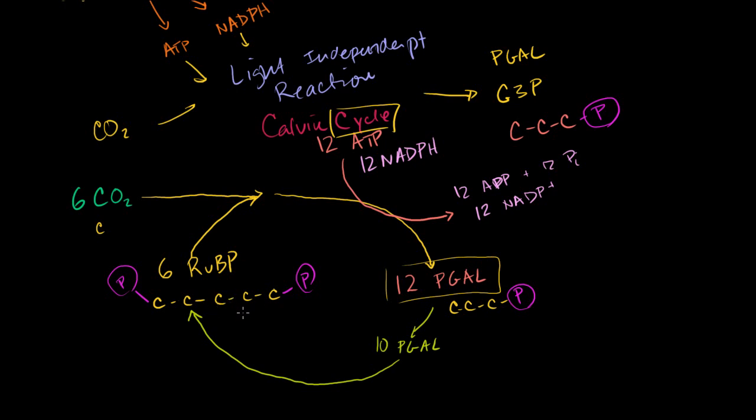But this, once again, is going to take energy. This is going to take the energy from 6 ATPs. So you're going to have 6 ATPs, essentially losing their phosphate group. The electrons enter lower energy states, drive reactions. And you're going to have 6 ADPs, plus 6 phosphate groups that get released. And so you see, it is a cycle. But the question is, well, gee, I used all of these. What do I get out of it?